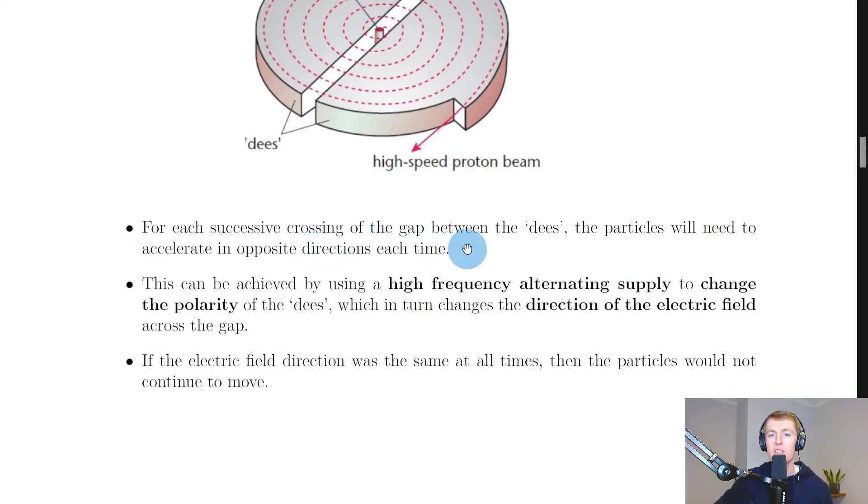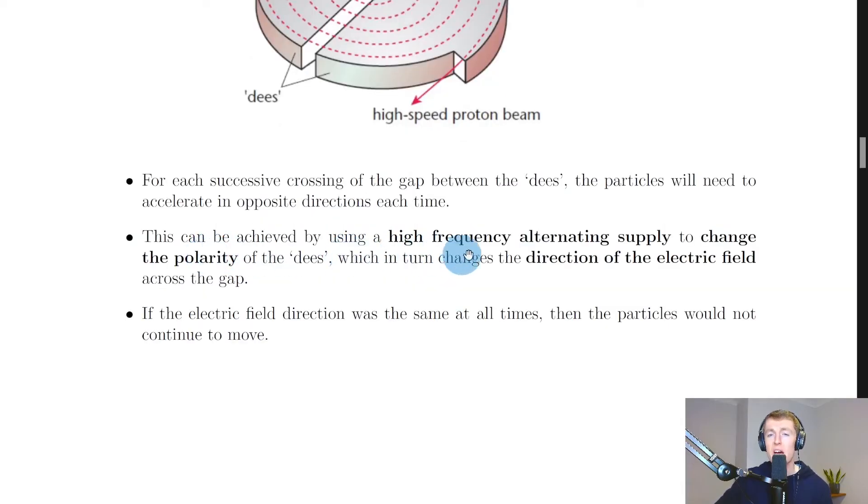For each successive crossing of the gap between the dees, the particles will need to accelerate in opposite directions each time. This can be achieved by using a high frequency alternating supply to change the polarity of the dees, which in turn changes the direction of the electric field across the gap.